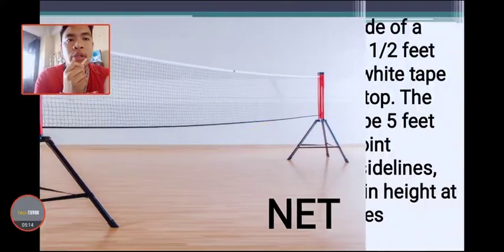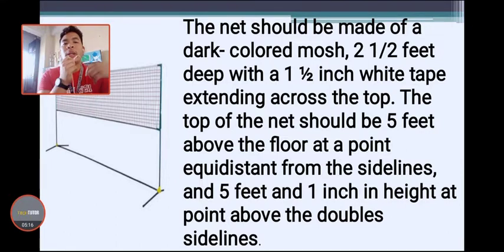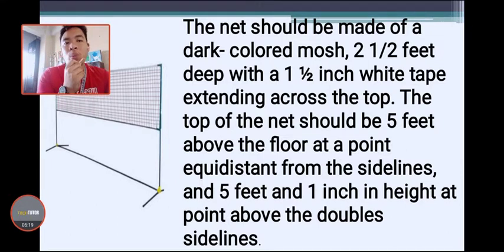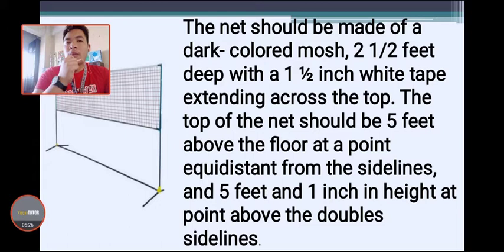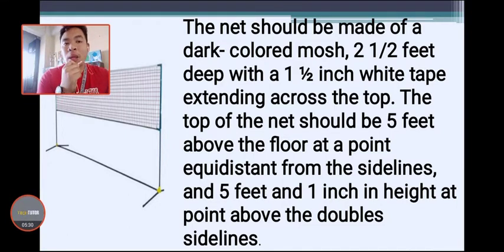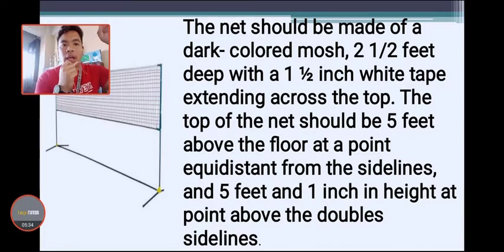The net measures two and one-half feet deep with a white tape at the top. The badminton net is relatively low compared to a volleyball net, which is higher than head level — the badminton net is quite different.